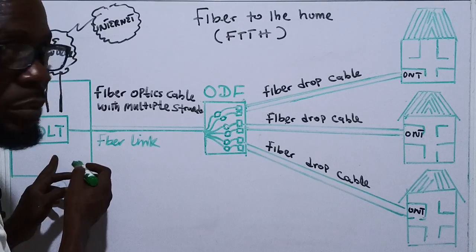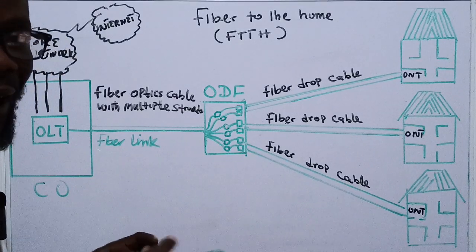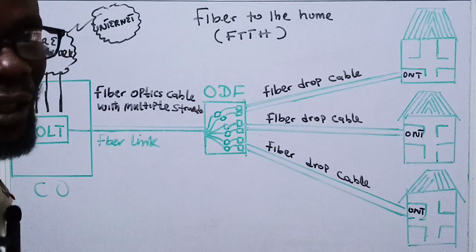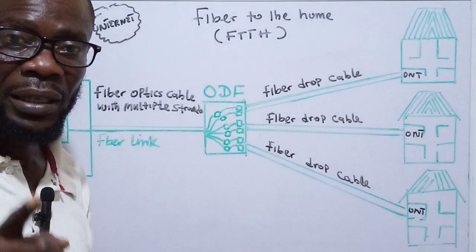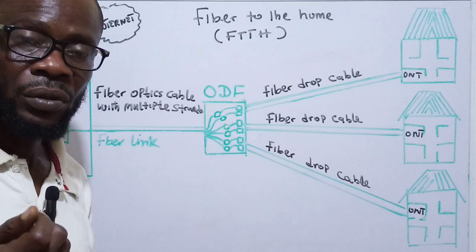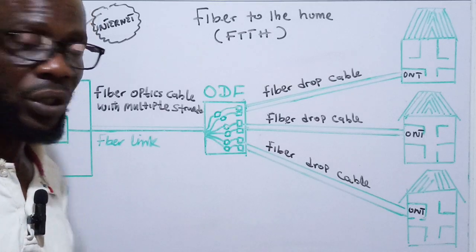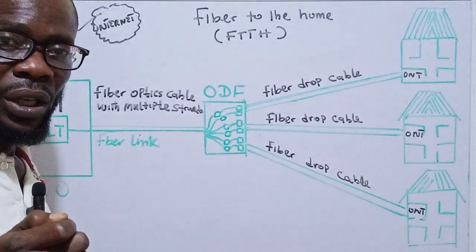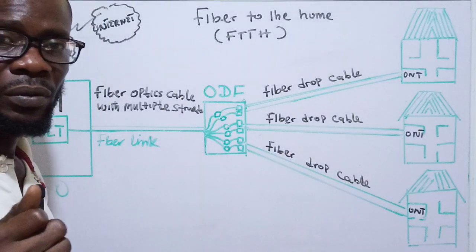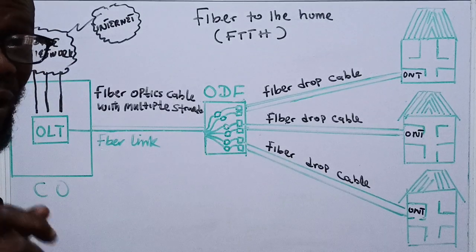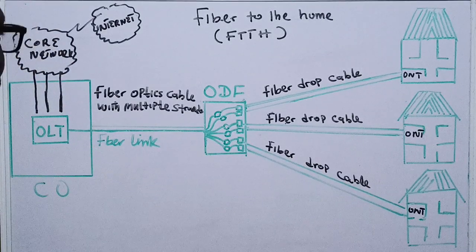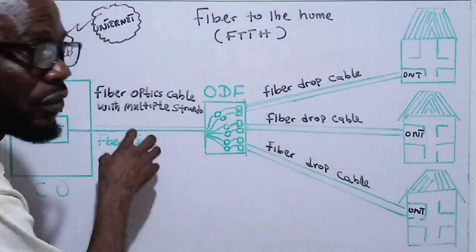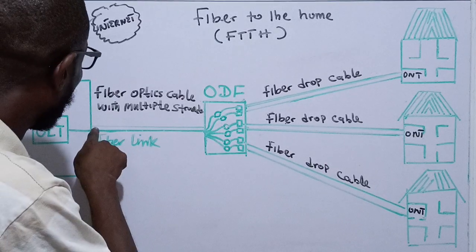From the OLT, they splice fiber cables. Inside a fiber optic cable there are fiber strands — the fiber core, which looks like a glass tube, transmits light. This fiber optic cable can contain many fiber strands that are run underground.